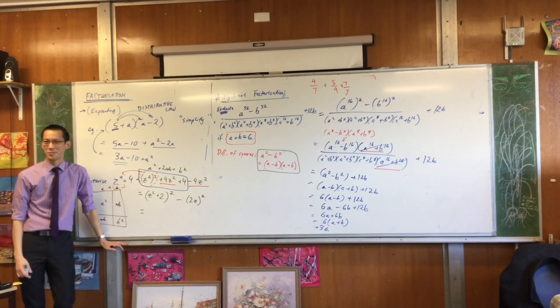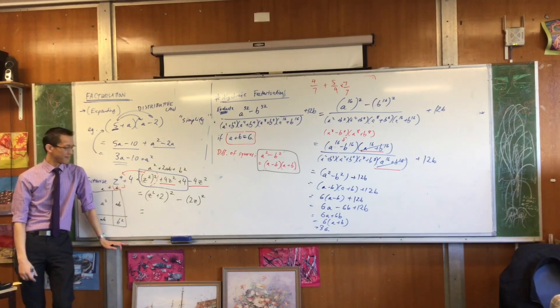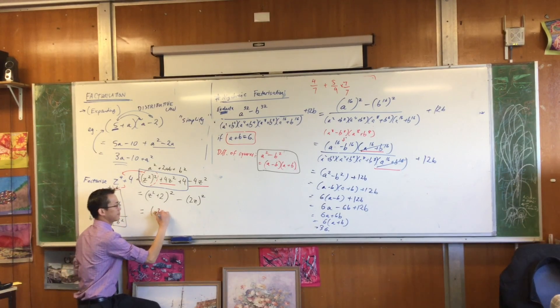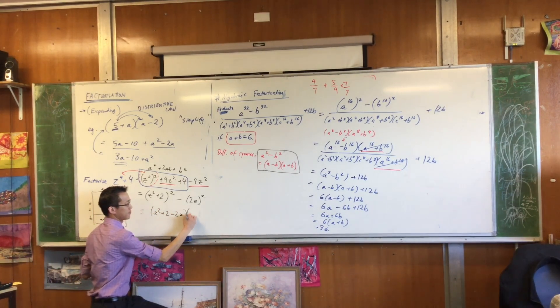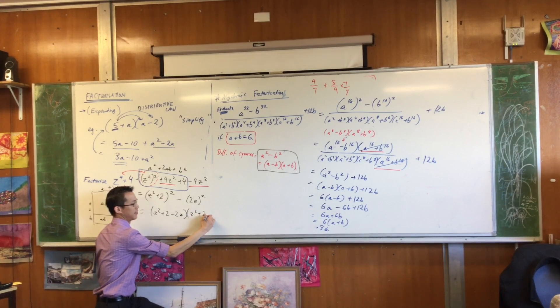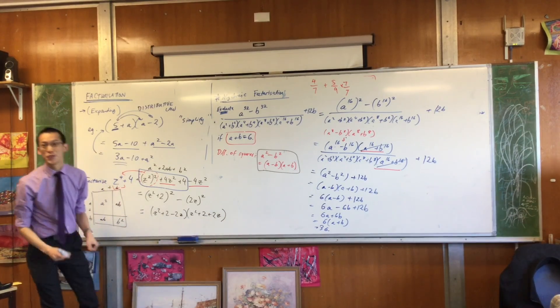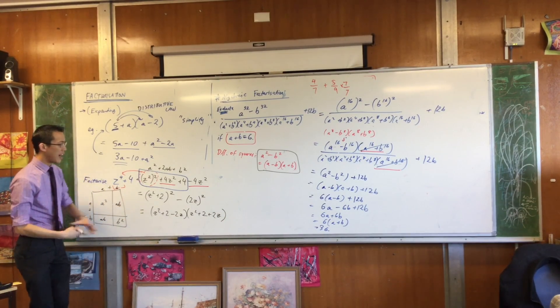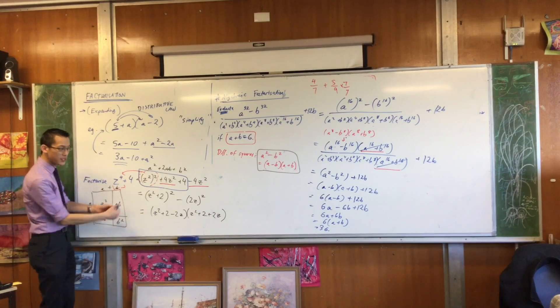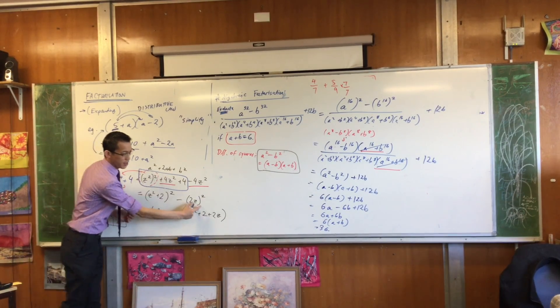Yeah. z squared plus 2 minus 2z times z squared plus 2 plus 2z. We couldn't use difference of squares before. But after Nick helped us out, you can see difference of squares is there hiding underneath. This square take away this square.